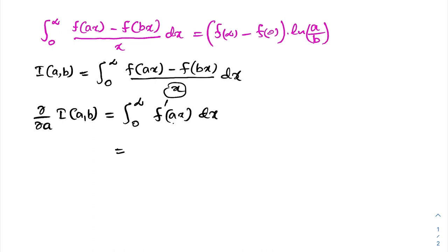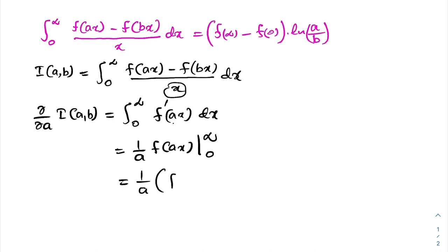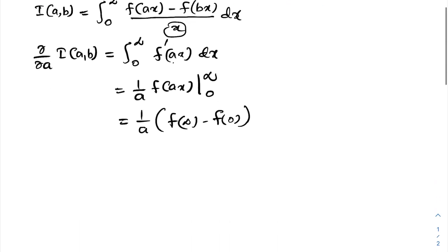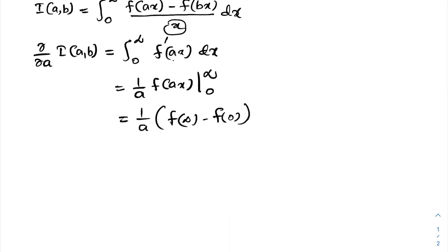If we integrate f'(ax) we get f(ax), but since the coefficient of x is a, we divide by a. So we have (1/a) f(ax) evaluated from zero to infinity. Applying the limit gives us (1/a)[f(infinity) minus f(0)].